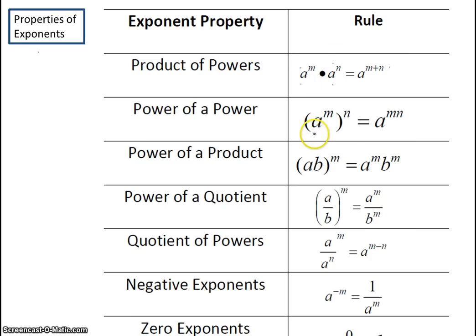If you have one base raised to a power that's raised to another power, you end up multiplying those exponents. The power of a product: we essentially distribute the exponent. And the same goes for the power of a quotient — we are going to essentially distribute your exponents. The quotient of powers is when we have a fraction, and we are going to subtract our exponents with m minus n.